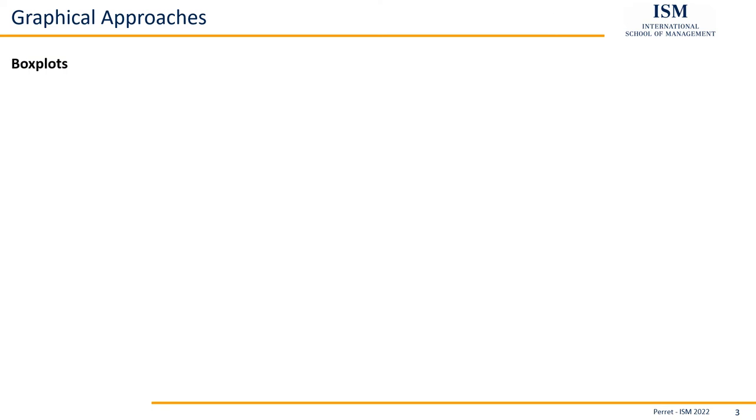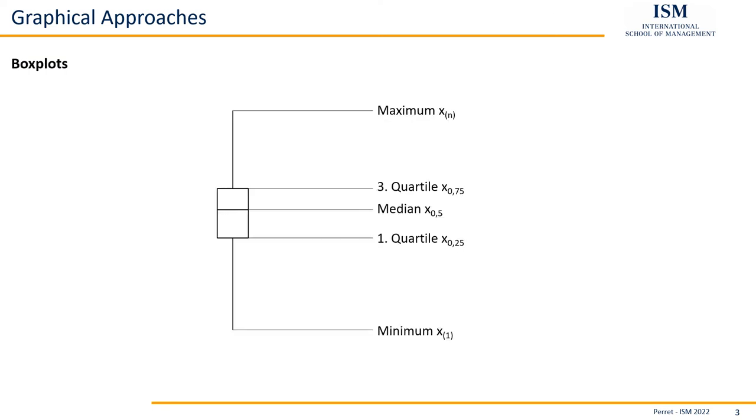Second approach would be so-called box plots. With a box plot, we have two major approaches on how to construct one. Here we have an example of the first way. The first one, we have the box in the middle, and we have these antennas or whiskers. The upper whisker, the lower whisker. And in this version I present here, the upper whisker starts at the maximum, the lower whisker at the minimum. So meaning from lower to upper whisker, that's the whole range we have.